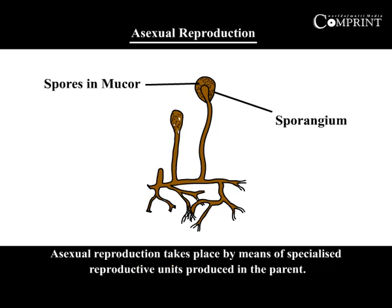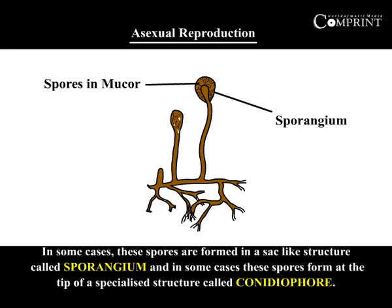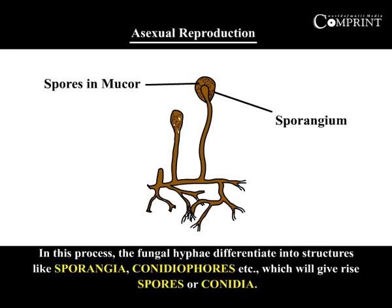Asexual reproduction takes place by means of specialized reproductive units produced in the parent. In some cases, these spores are formed in a structure called sporangium. And in some cases, these spores form at the tip of a specialized structure called conidiophore.